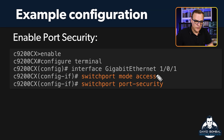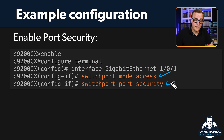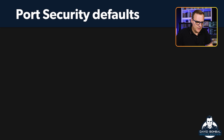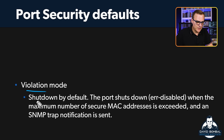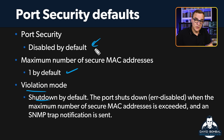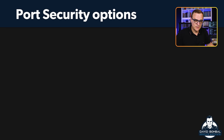As you can see, basic port security is very simple to set up. We made the port an access port and we enabled port security. The default violation mode is shutdown. The maximum MAC address allowed is one. Port security is disabled by default, so you have to enable it.